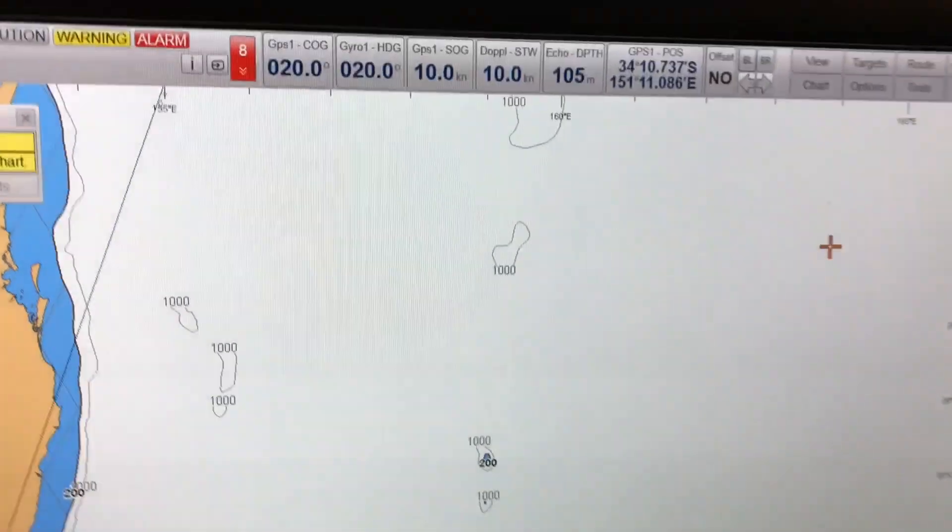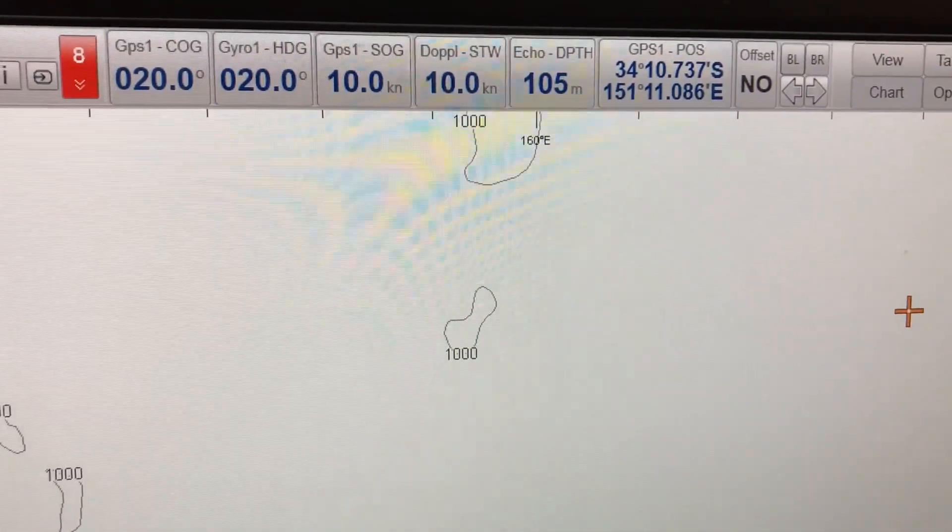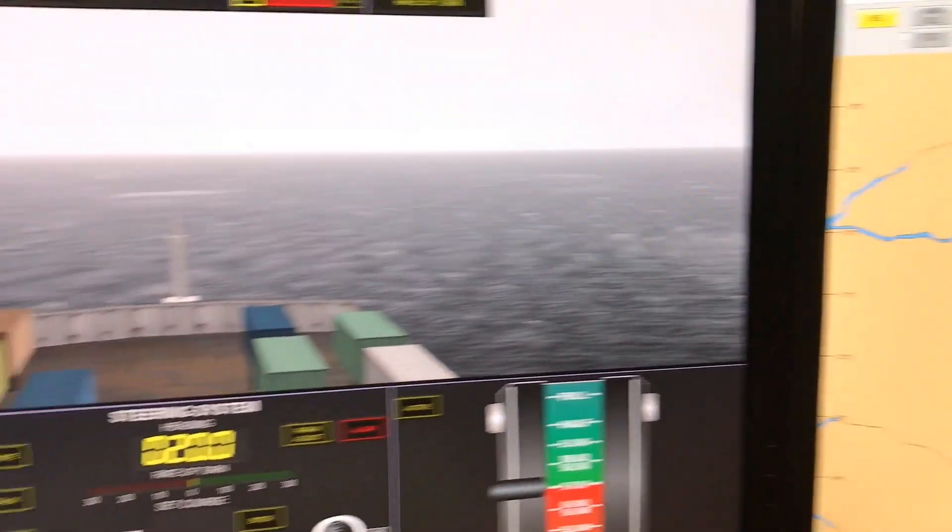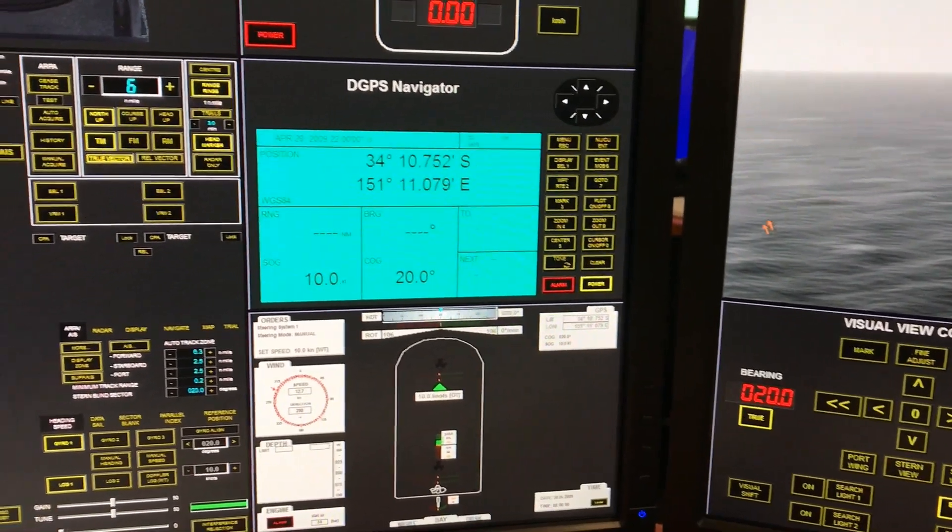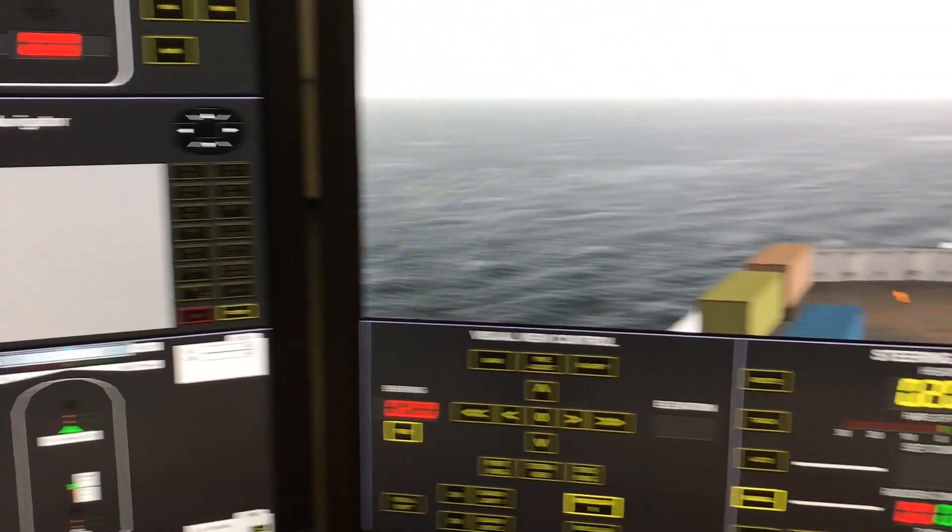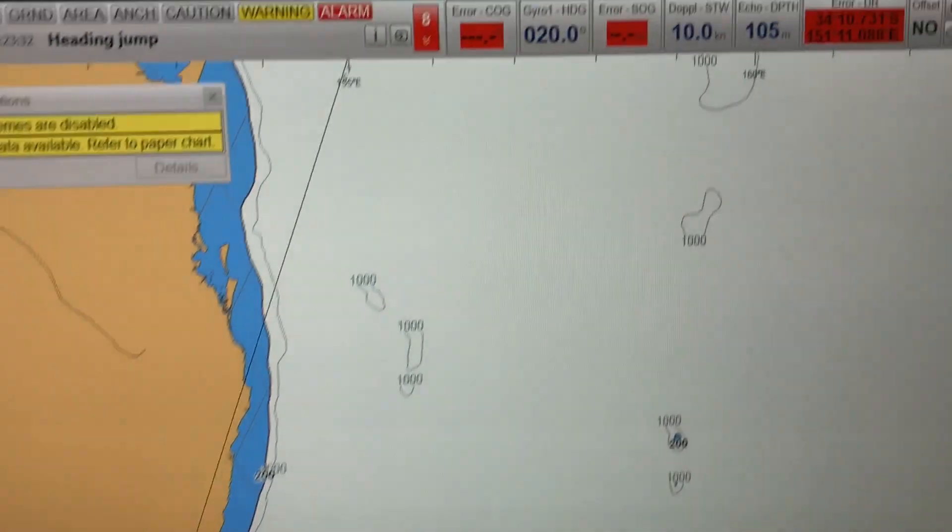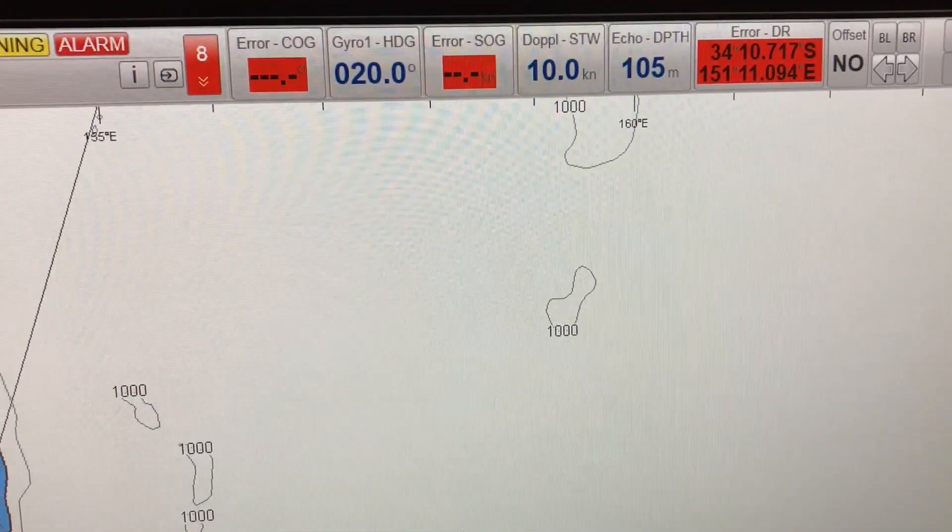So here you can see the top of the ECDIS screen that the GPS input is coming through: the position, the speed over ground, and the course over ground. However, if I switch off the DGPS here—or the GPS here, the digital GPS—as soon as I switch off the power, you will see that all those inputs become red in color, which shows that there is no reliable input into the ECDIS now. That means it is not reliable anymore.